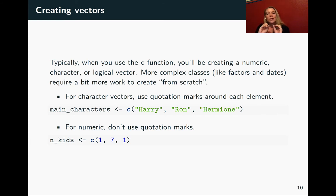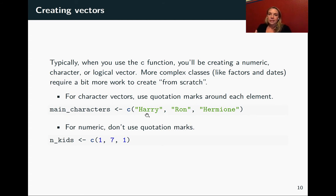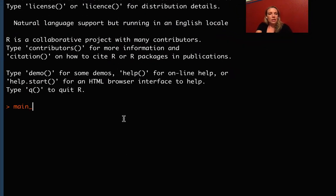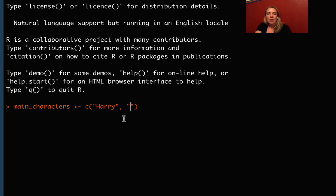You will use concatenate a little bit differently depending on the class of the vector you're creating. I won't go into how to create dates or factors — those take extra work — but I will talk about creating character vectors and numeric vectors. For character vectors, you take each character string and put it inside quotation marks. Otherwise R will think you're referring to some object you created earlier. So we do `main_characters <- c("Harry", "Ron", "Hermione")`, putting each name in quotation marks and separating values with a comma.